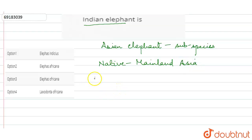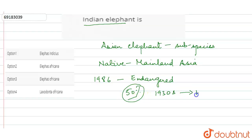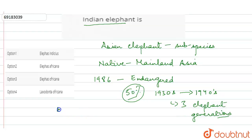The Indian elephant — since 1986, the Asian elephant has been listed as endangered on the IUCN Red List. It is an endangered species. The wild population has declined by at least 50%, from the 1930s to 1940s, across three elephant generations.